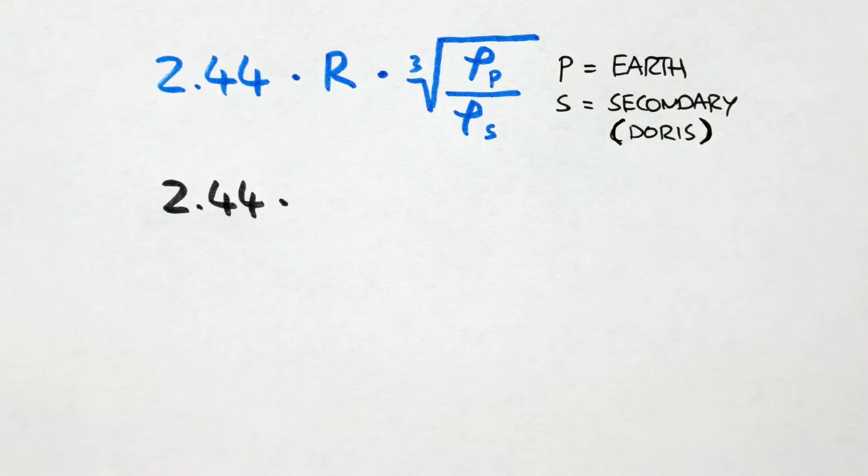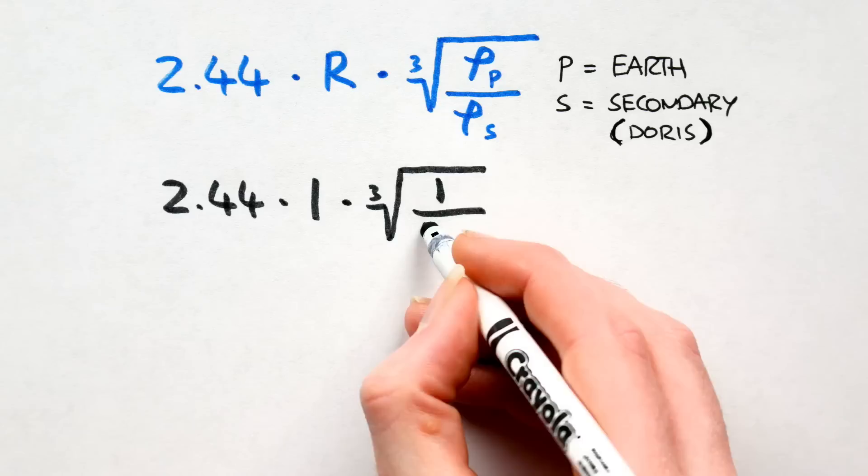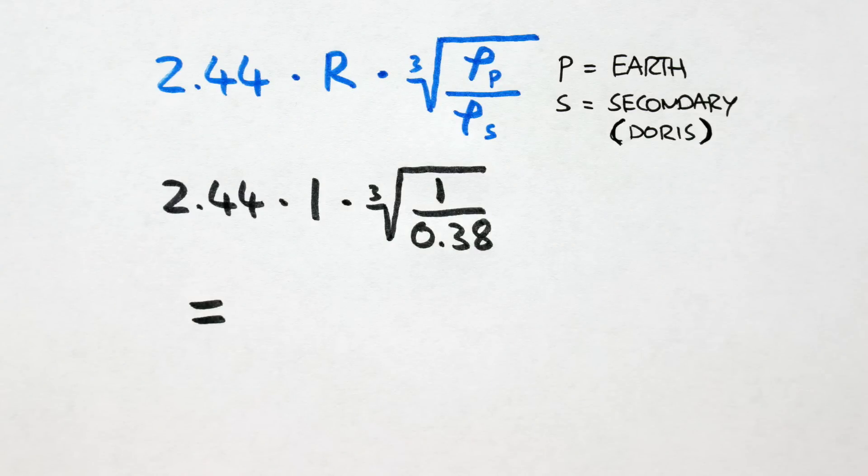So it's 2.44 times the radius of the Earth, 1, cause as always we're working in Earth units, times the cube root of the density of Earth, again 1, divided by the density of Doris, which Wikipedia tells me is roughly 0.38 times as dense as Earth. Run the numbers and we'll find that the outer limit lies 3.37 Earth radii from the centre of Earth.